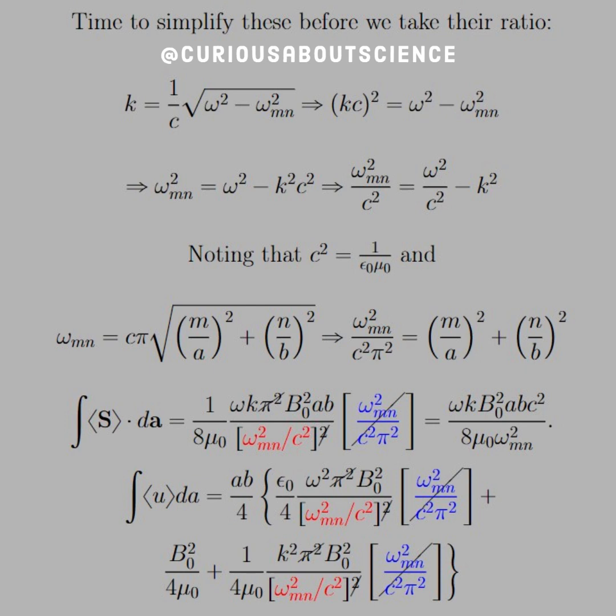So we can put in the blue term there, which is omega squared mn over c squared pi squared. Good to go there.